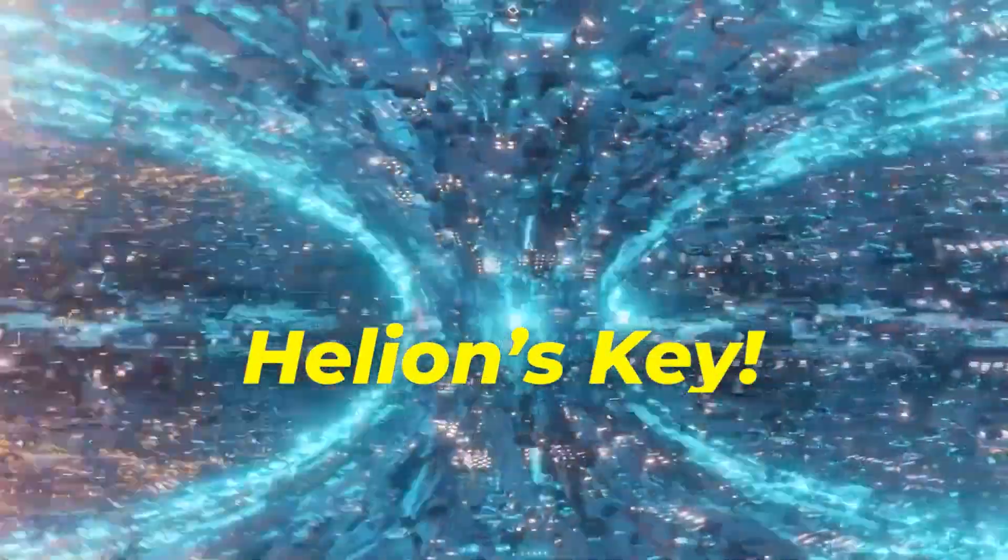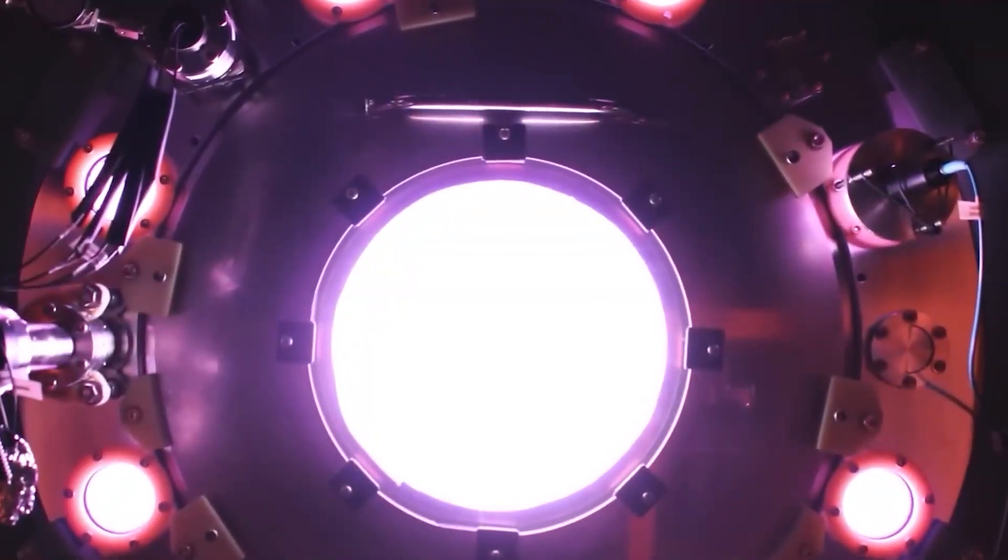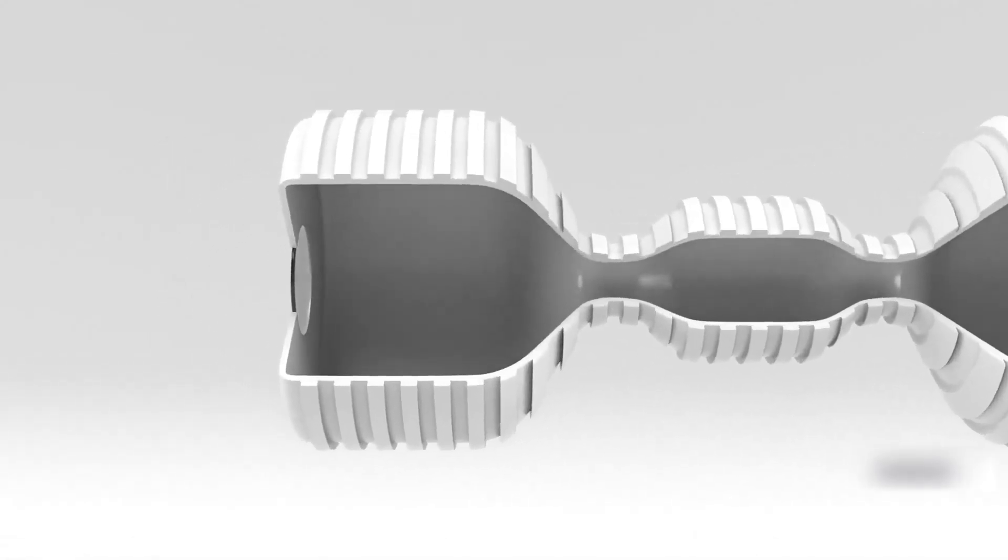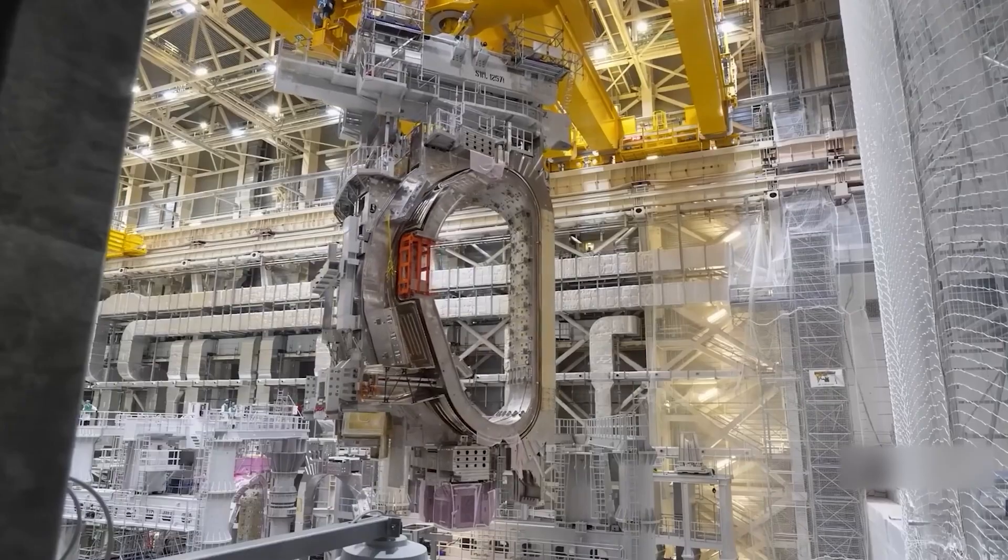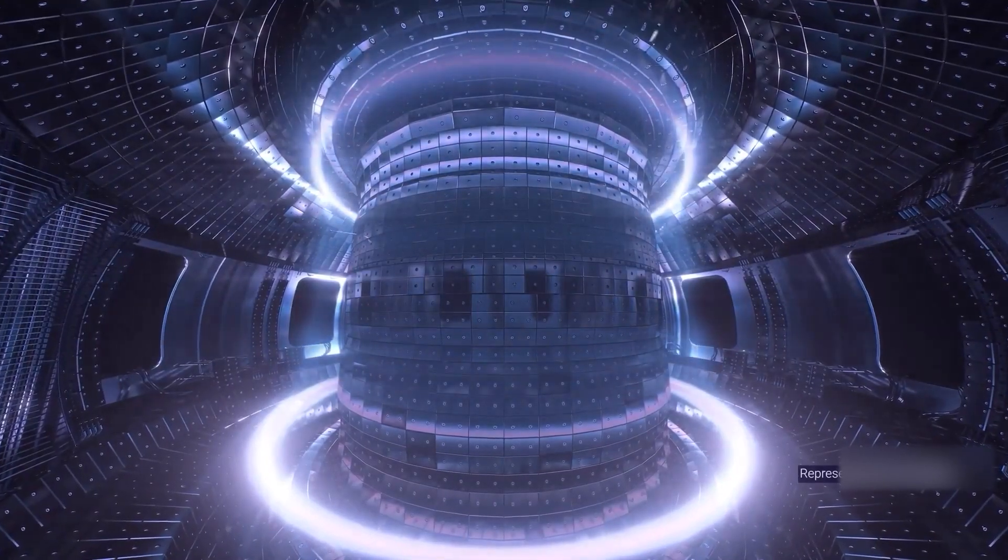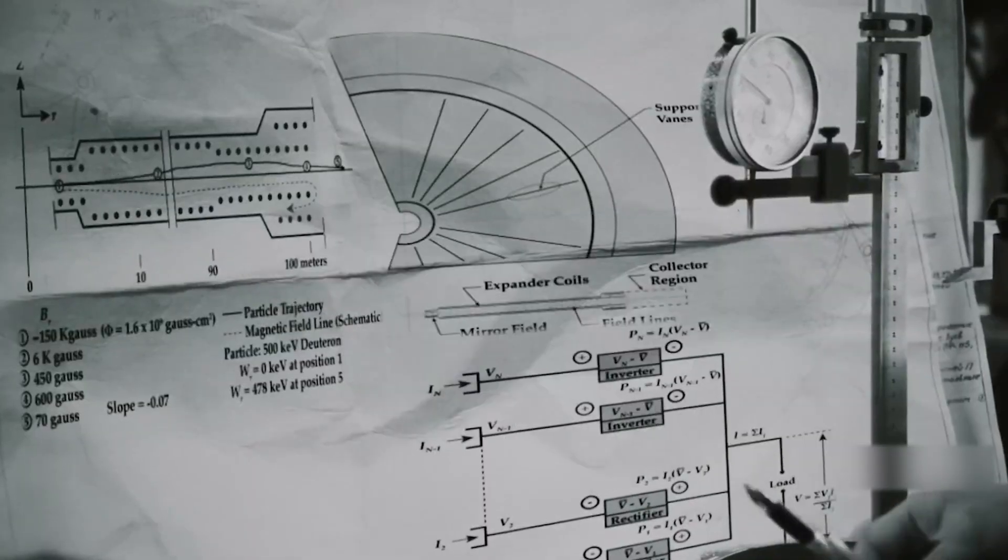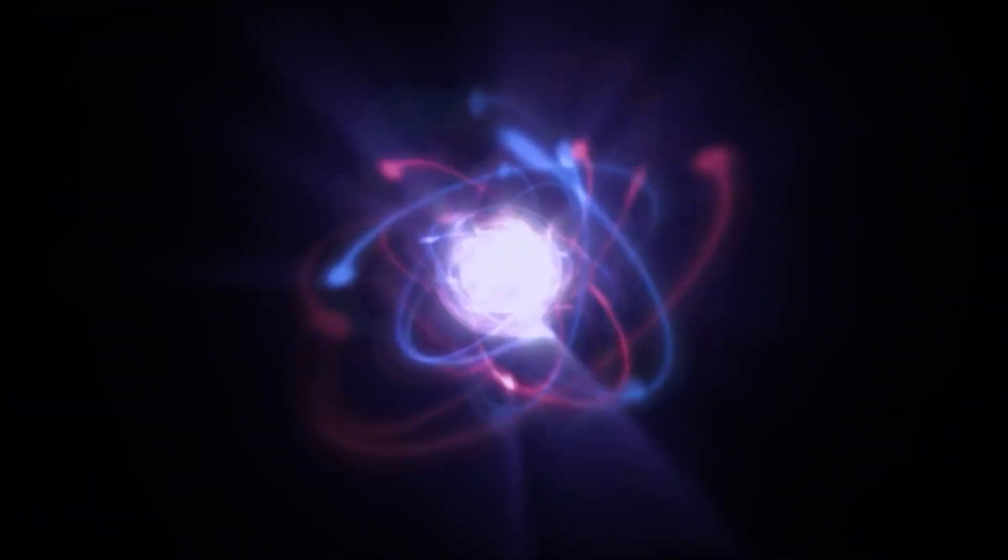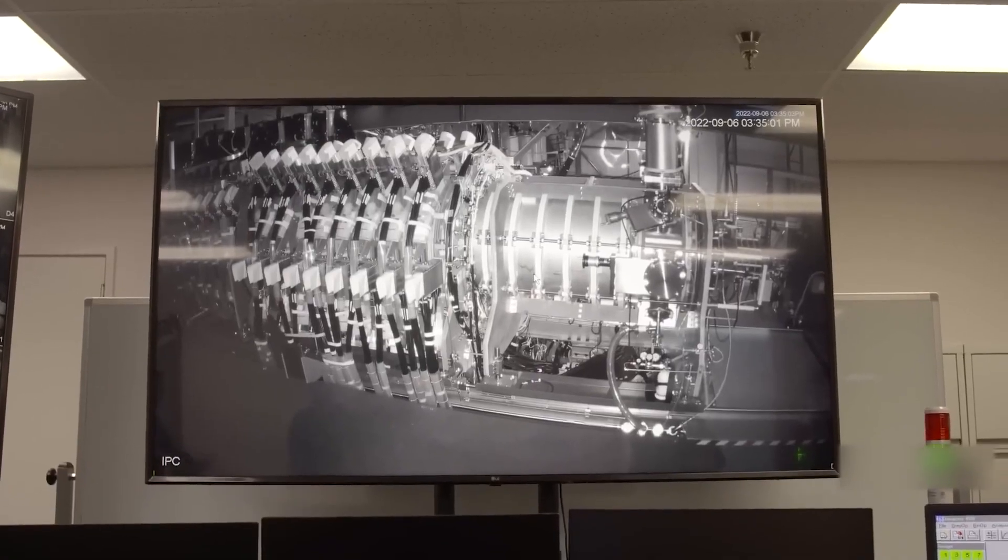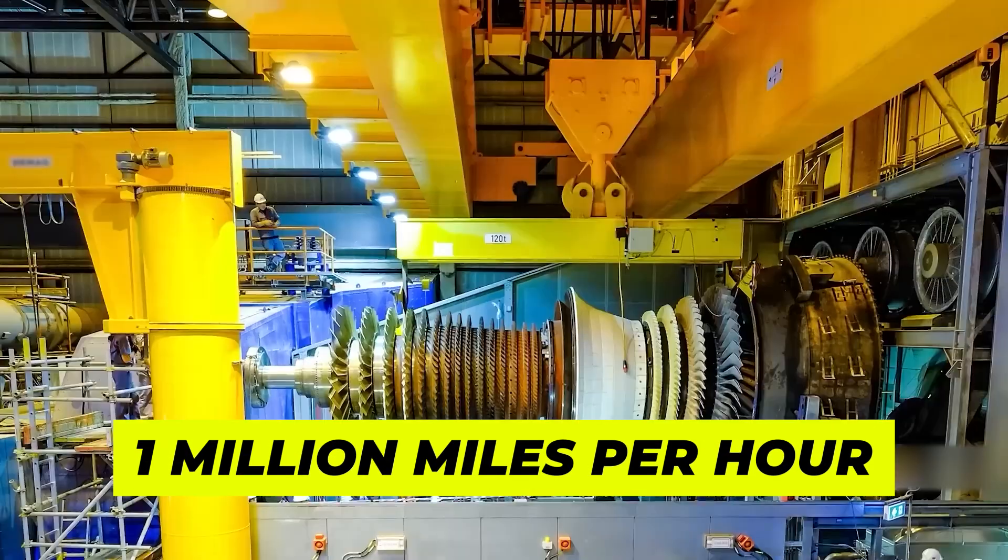But how does Helion Energy's innovative fusion approach eliminate the need for mechanical devices that convert kinetic energy to energy generation? Helion Energy introduces an innovative method to address the challenge of abundant energy. Their key solution lies within these vividly glowing purple rings, propelled at speeds surpassing 1 million miles per hour.